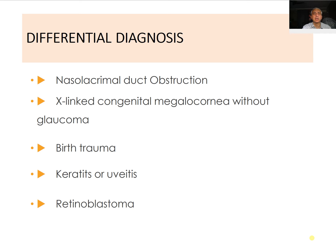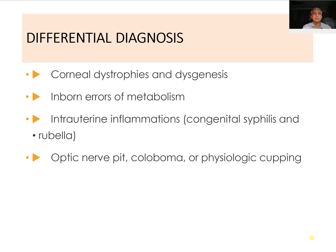Birth trauma, keratitis, uveitis, and retinoblastoma can all be confused with congenital glaucoma. Corneal dystrophies and dysgenesis can also mimic it, as advanced glaucoma produces corneal edema and eventually scarring and opacification. Errors of metabolism and corneal dystrophies also produce corneal whitening. Intrauterine inflammation such as congenital syphilis or rubella, optic disc pit, coloboma, and physiological cupping are additional differentials. Enlarged eyeball with corneal whitening makes congenital glaucoma more probable.